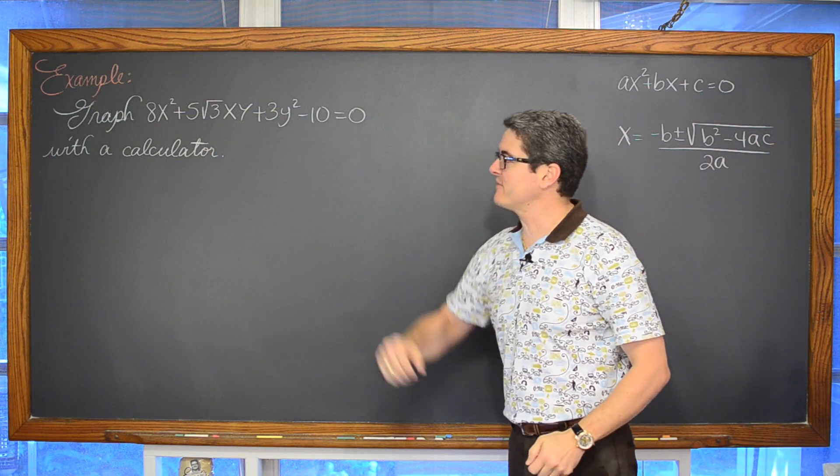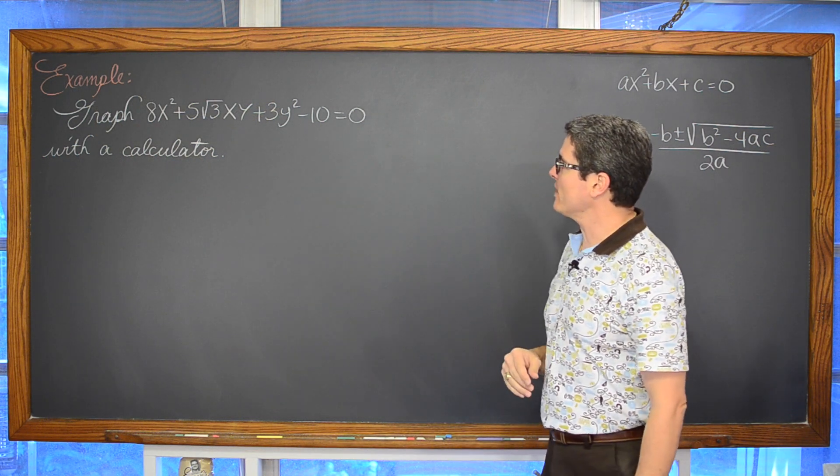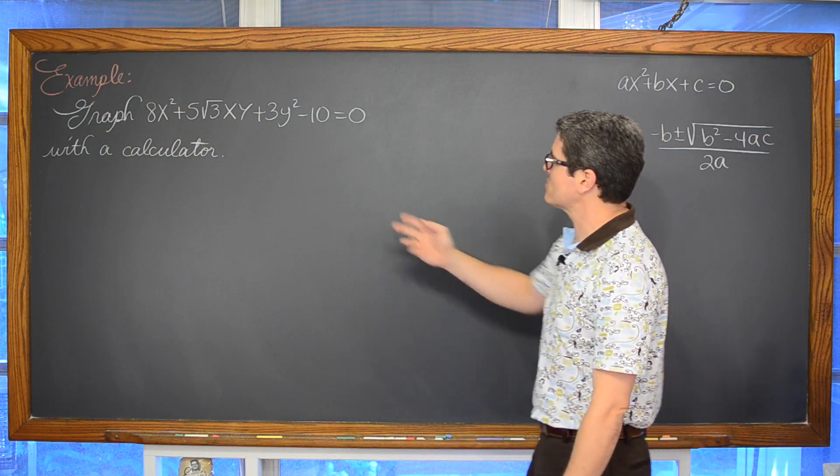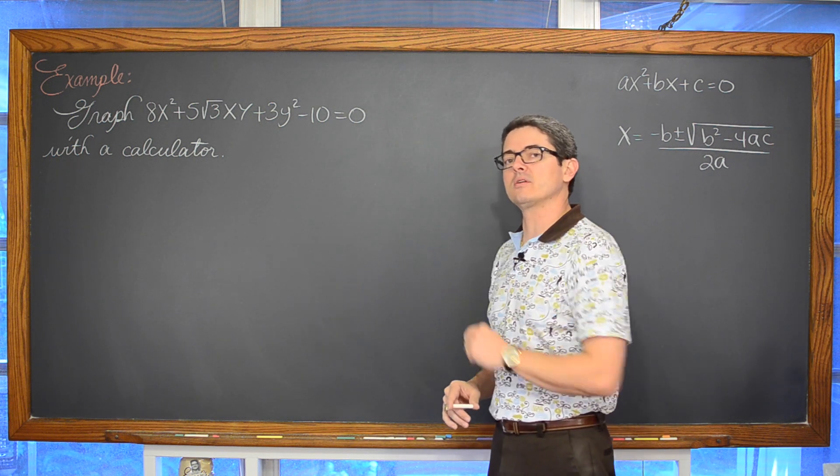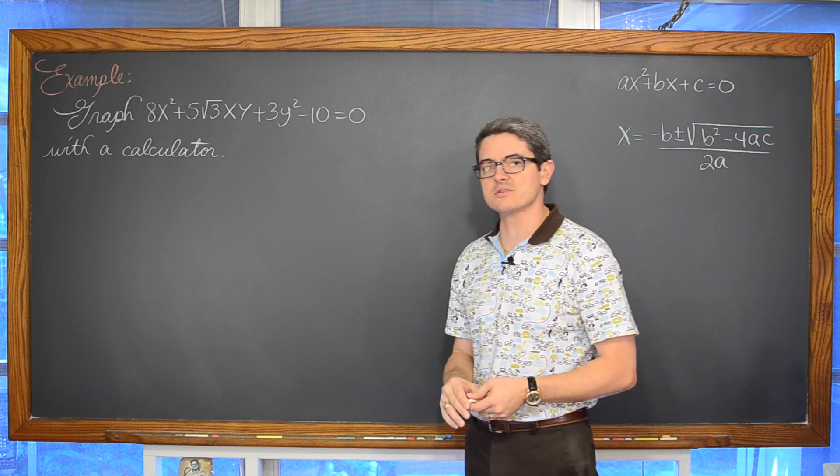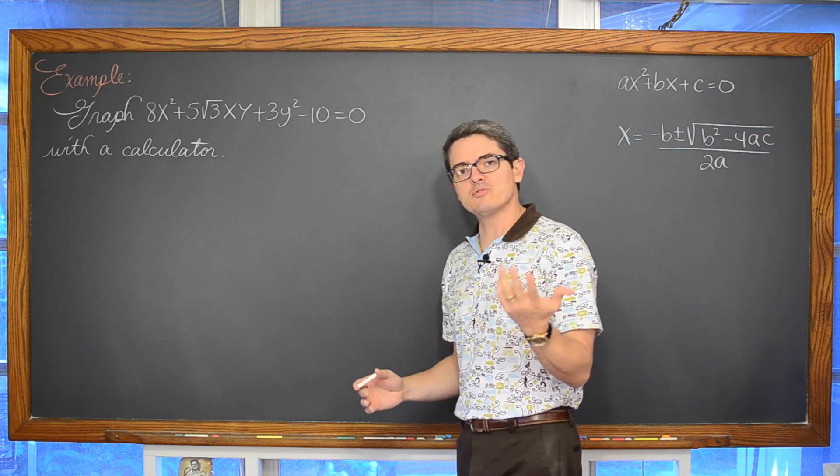I am going to talk about how we are going to graph 8x² + 5√3xy + 3y² - 10 = 0 with a calculator as opposed to rotating the axis and doing it by hand. Check your work if you will.